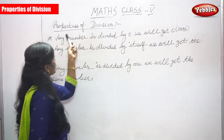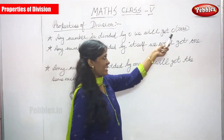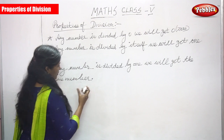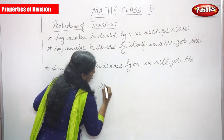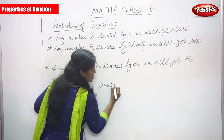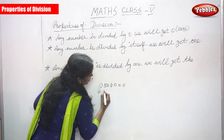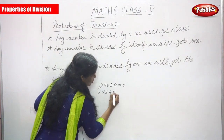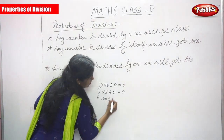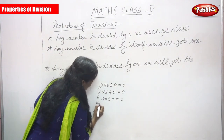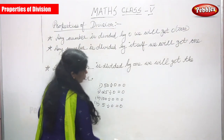Properties of division. First property: any number divided by zero, we will get zero. For example, 50 divided by zero you get zero. 25 divided by zero you get zero. 100 divided by zero you get zero. Even a single digit number, for example five divided by zero you can get zero. This is the first property.